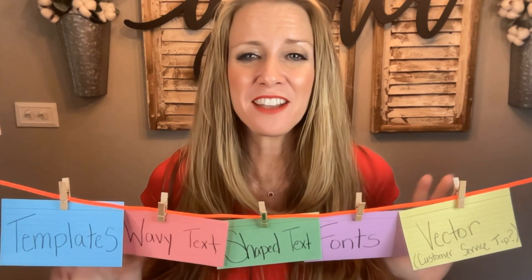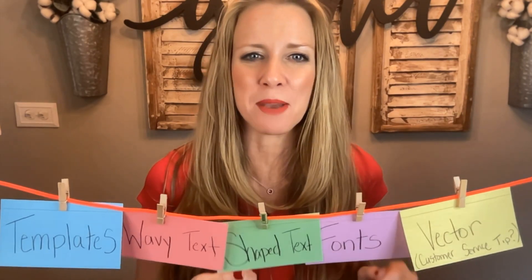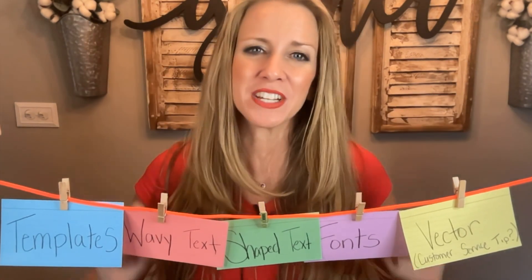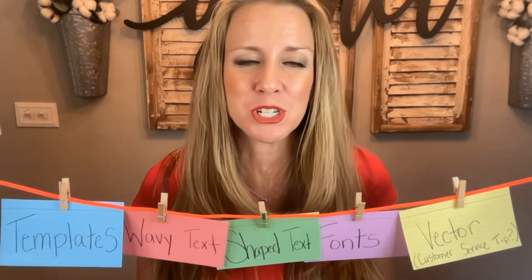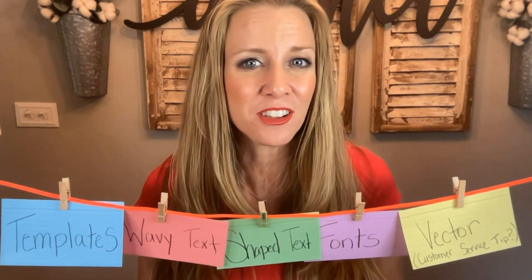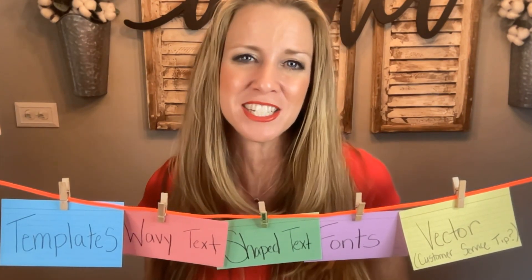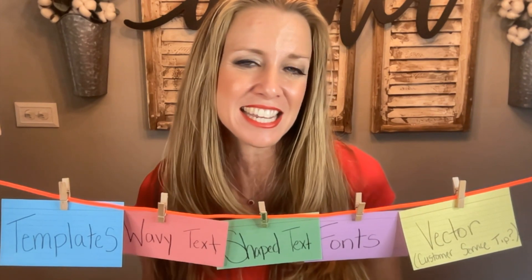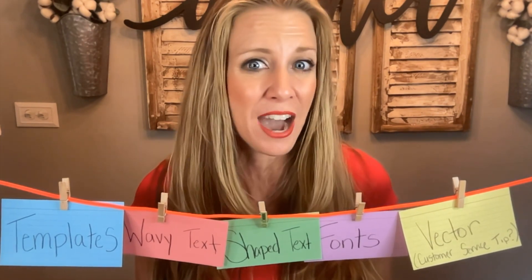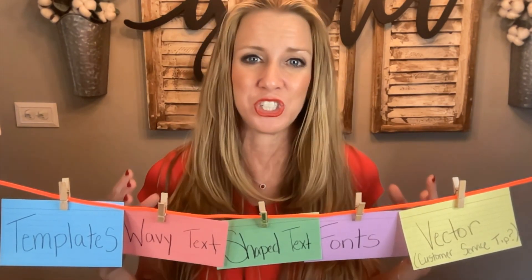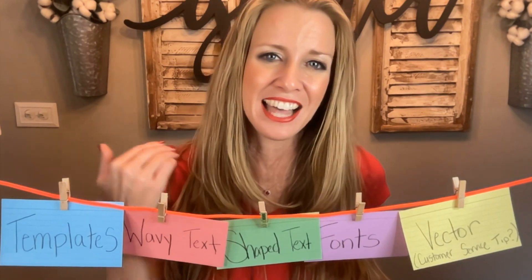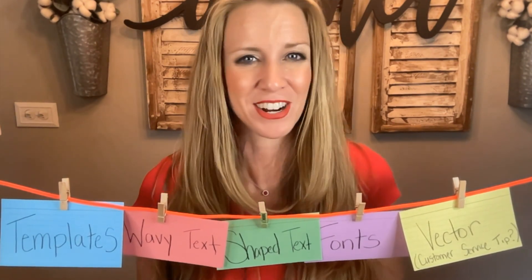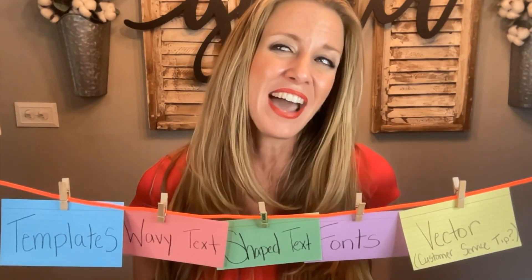There you have it — your five features: templates, wavy text, shaped text, fonts, and vectorize a file. Don't forget you have a link in the description to get $15 off, good until November 1st. Keep hanging out with me — in the next video linked here you can learn how to do that shaped text and level up your designs. Tucker, take it away!